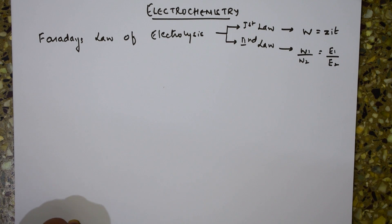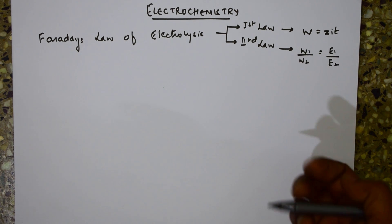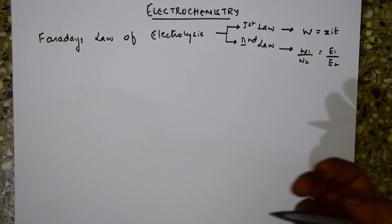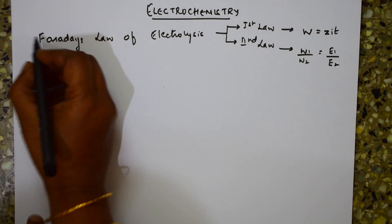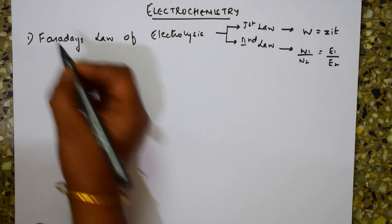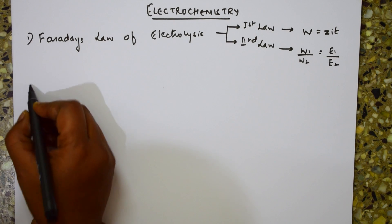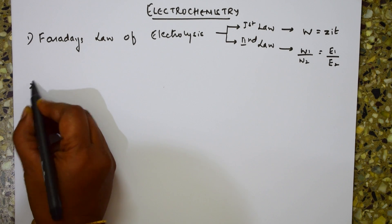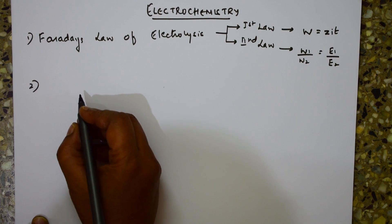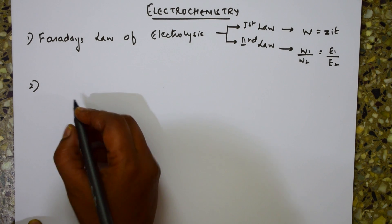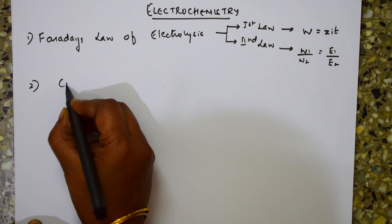This represents the electrochemical equivalence. If you have any doubt, go back to the electrochemistry chapter in the playlist for the explanation. After Faraday's first and second law, the next very important formula in electrochemistry is the formula for conductance.